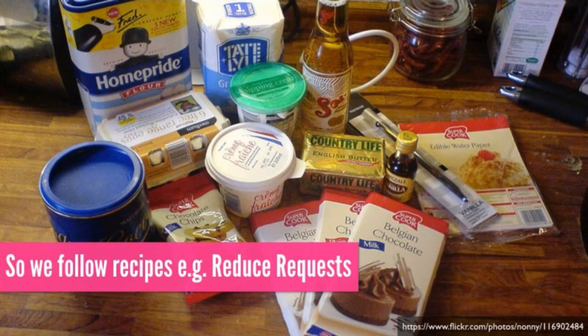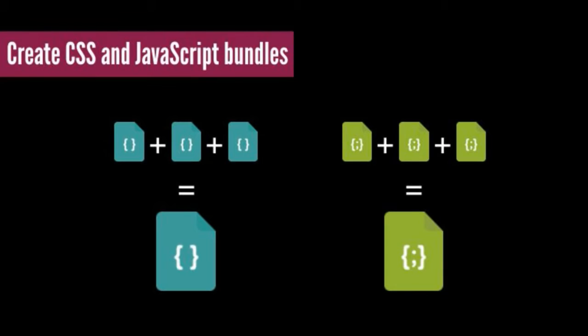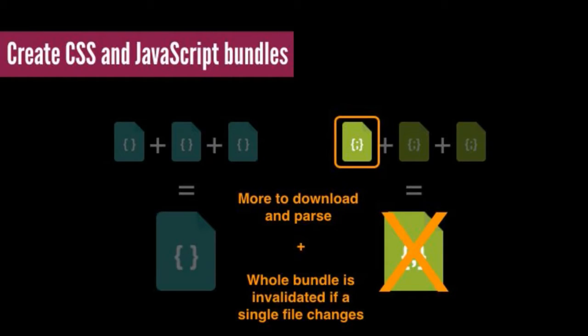To overcome this, we follow recipes — Steve Souders' recipes — without always being aware of the implications. One recipe is to bundle small CSS or JavaScript files together to fill the congestion window, reduce latency overhead, and eliminate header duplication. But that comes with implications: we give the browser more to download whether it needs it or not, and if we change just one part of that bundle, it becomes invalid and the browser or proxy cache has to download it again.